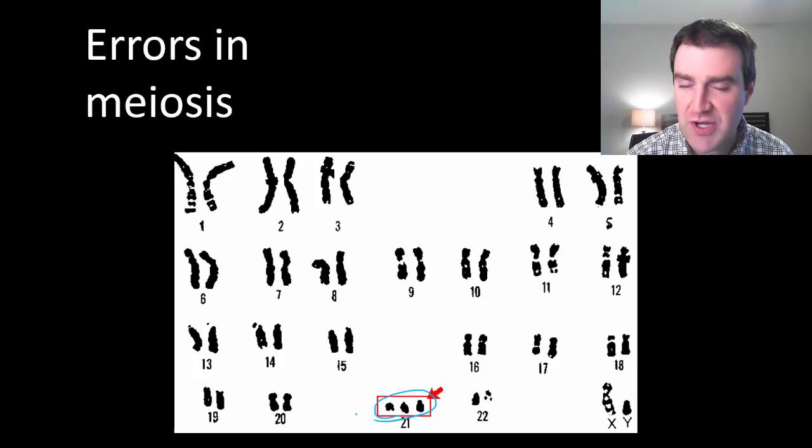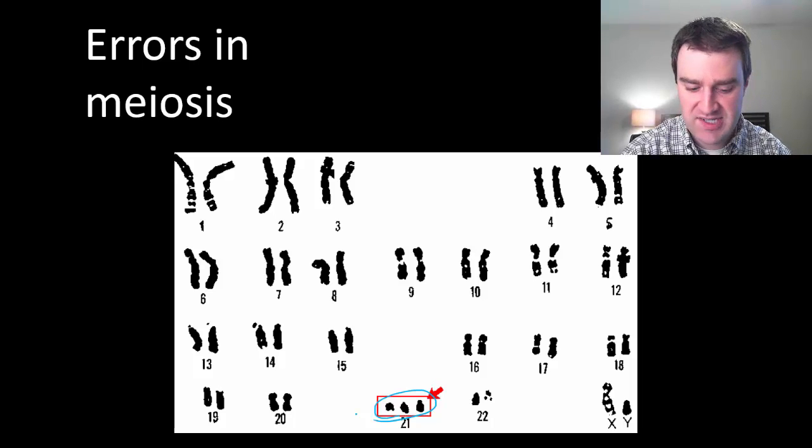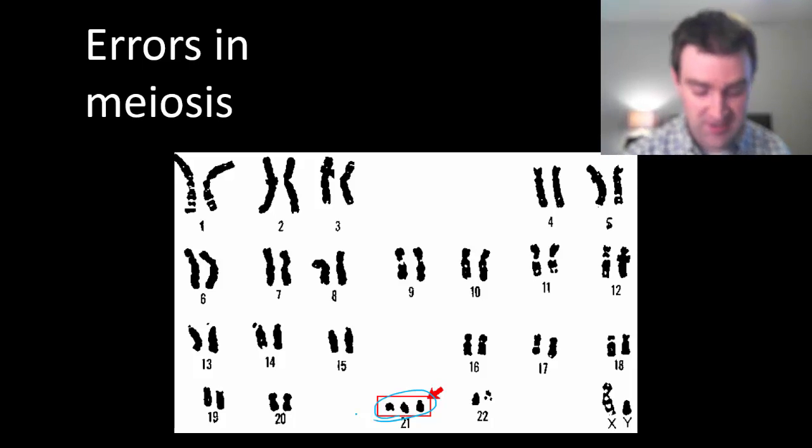Chromosomal errors almost always cause a huge global effect on an organism because that original cell that has too many or too few chromosomes will go on to copy and so all of the body cells will have the wrong number of chromosomes and that's why you get such a big effect. So people with Down syndrome typically have shorter stature. They typically have moderate to mild mental impairment. So there's just kind of all kinds of global effects of having the wrong chromosome number.